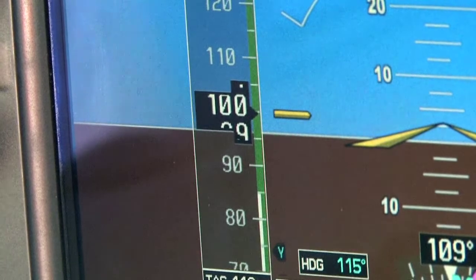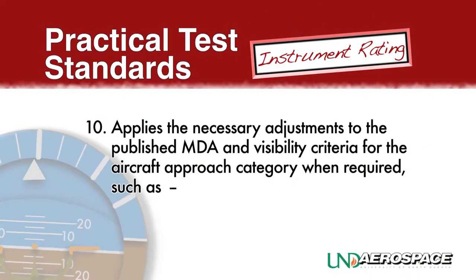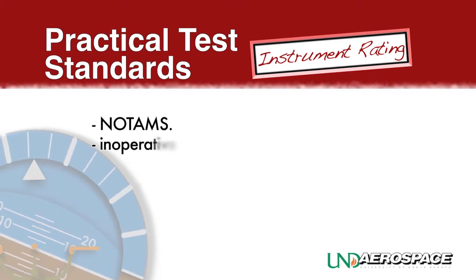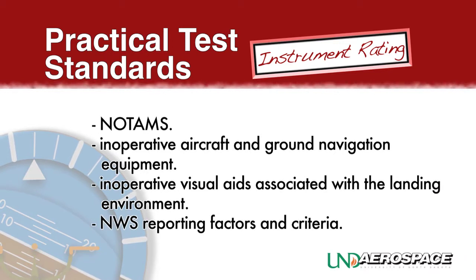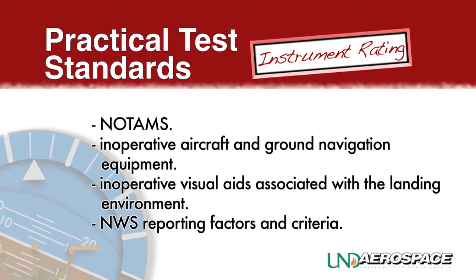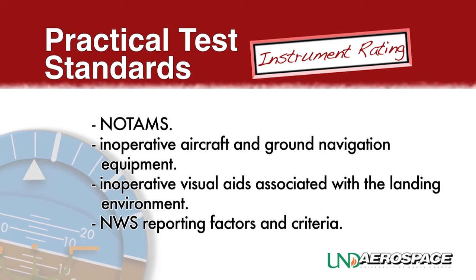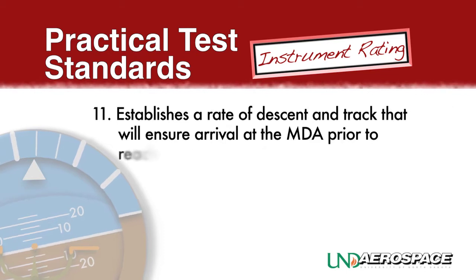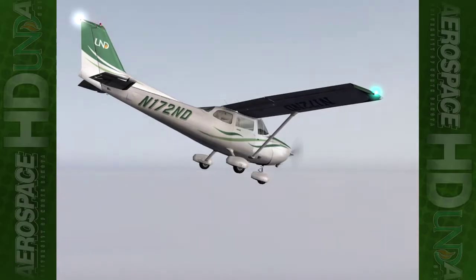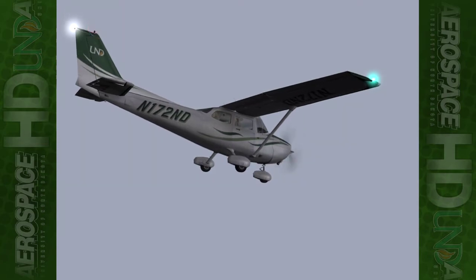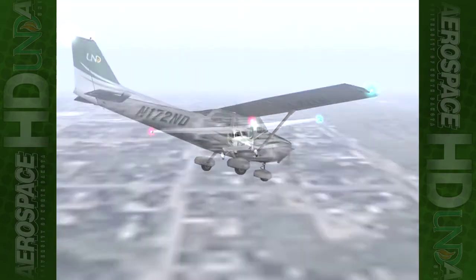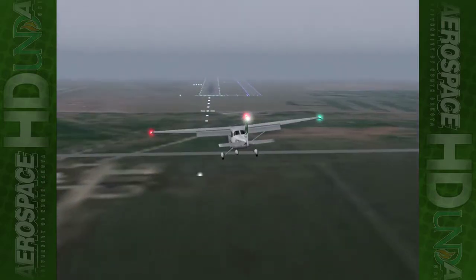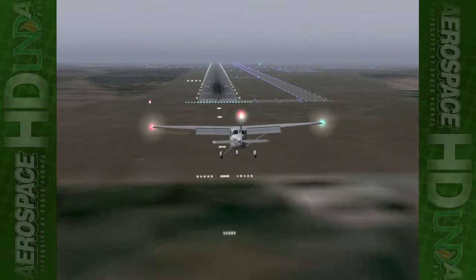Applies the necessary adjustments to the published MDA and visibility criteria for the aircraft approach category when required, such as NOTAMs, inoperative aircraft and ground navigation equipment, inoperative visual aids associated with the landing environment, and NWS reporting factors and criteria. Establishes a rate of descent and track that will ensure arrival at the MDA prior to reaching the missed approach point, with the aircraft continuously in a position from which descent to a landing on the intended runway can be made at a normal rate using normal maneuvers.